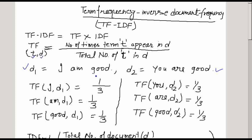The term frequency for 'good' in D1 is also 1/3, because 'good' appears one time and the total number of terms is three. For D2 'you are good', the term frequency for 'you' in D2 is 1/3 because 'you' appears one time and there are three total terms. Similarly, 'are' and 'good' each have a term frequency of 1/3 in D2.